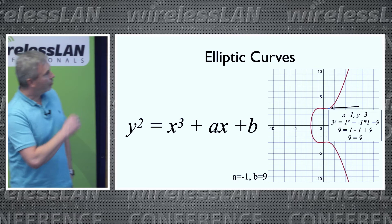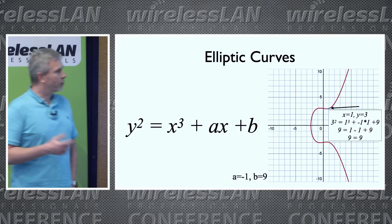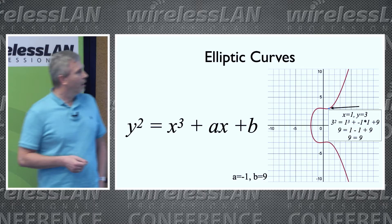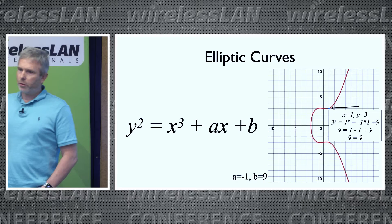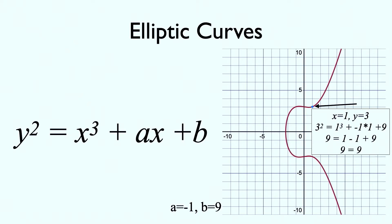So what is an elliptic curve? We have an equation: y² = x³ + ax + b. If we use the values minus one and nine for a and b, we get this beautiful curve. Diophantus was interested in finding rational points on this curve. If we use the coordinates x equals one and y equals three, we see that this is a point on the curve, because the equation is satisfied.